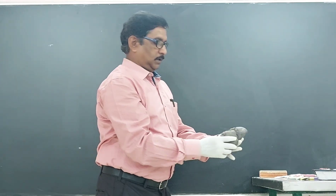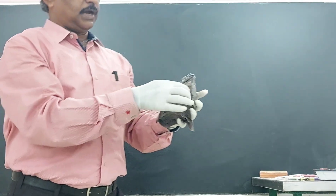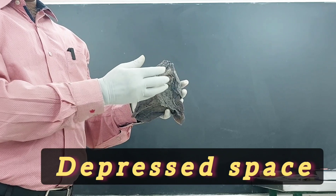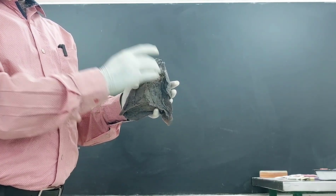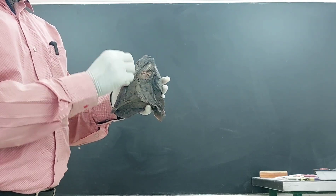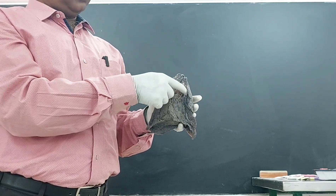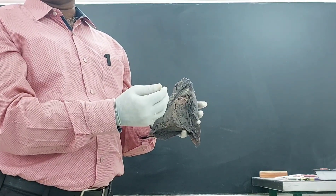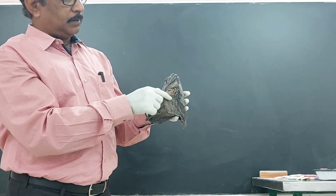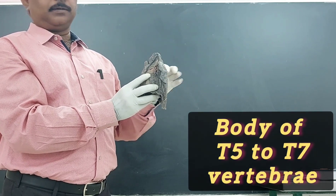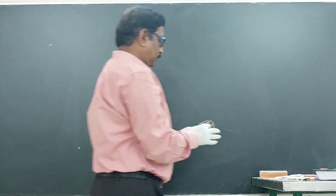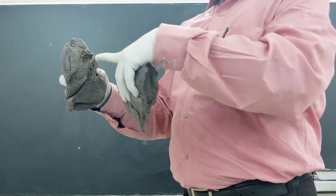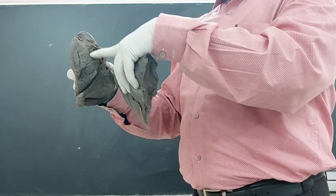The hilum is a depressed space or area on the medial surface of the lung, through which some structures enter into the lung and some structures come out from the lung. The vertebral level of the hilum is T5 to T7. On both the right and left sides, the hilum is this depressed space where structures enter and exit through the medial surface of the lung.